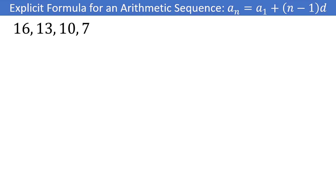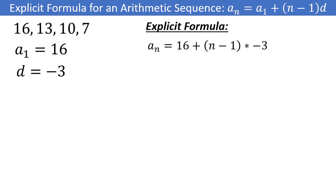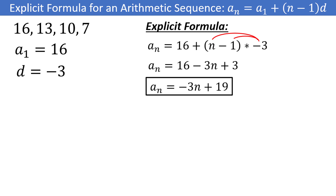Take a moment to see if you can write out an explicit formula for this arithmetic sequence. The first term is a sub 1 equal to 16, and the common difference is d equal to negative 3. So the formula is a sub n is equal to 16 plus (n minus 1) times negative 3. You can simplify it by distributing to get 16 minus 3n plus 3, which simplifies to negative 3n plus 19. This is a little nicer to plug into, but slightly less informative, as it hides your first term, which is very clear in the unsimplified form.